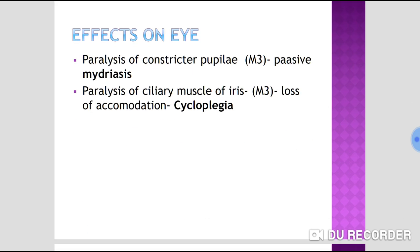Regarding effects on the eye: paralysis of the constrictor pupillae by acting on M3 receptors produces passive mydriasis. Paralysis of the ciliary muscle of the iris leads to loss of accommodation, causing cycloplegia. We call it passive mydriasis because the pupil dilation results from paralysis of the constrictor rather than active dilation.